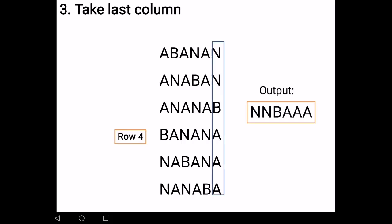So the third step is to take the last column. The last column here is your Burrows-Wheeler transform output. In this case, you have turned banana into N, N, B, A, A, A. Now, there's one little thing I want you to remember: you notice that the original word banana is at row number 4. We have to remember this.